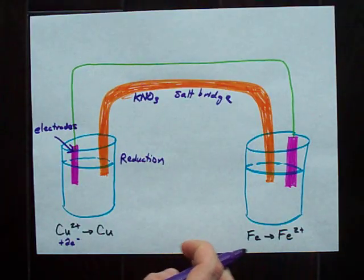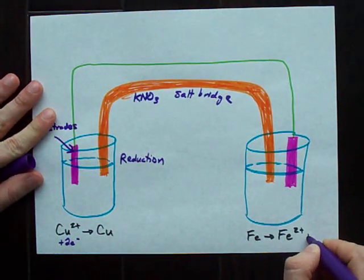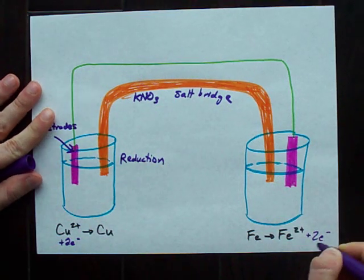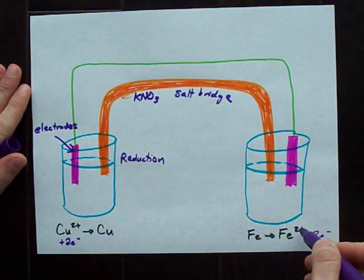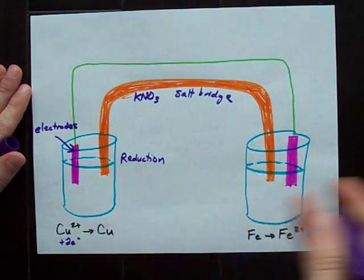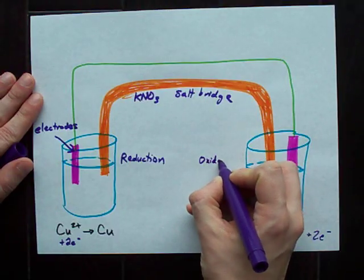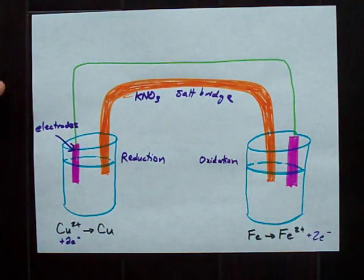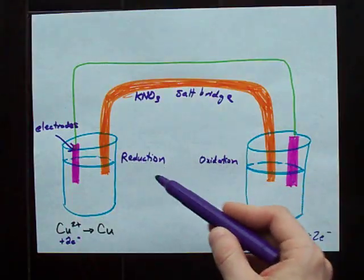This iron is becoming iron 2 plus. Where are the other two electrons going? That iron lost the two electrons, was left with a positive charge, and those electrons are now just somewhere else. Oxidation is our word for the loss of electrons.